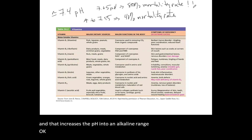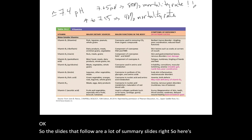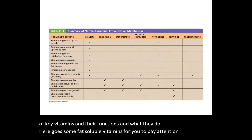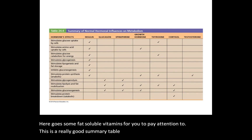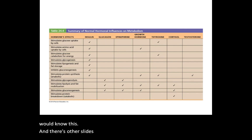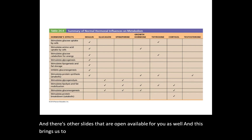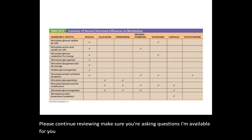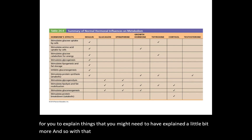The slides that follow are summary slides. Here's a table of key vitamins and their functions. Here are some fat-soluble vitamins to pay attention to. This is a really good summary table of hormonal control and what the hormones do — I would pay attention to this and know this. And there are other slides available for you as well. This brings us to the end of the digestive system. Please continue reviewing, make sure you're asking questions. I'm available to explain things in more detail. Happy studying.